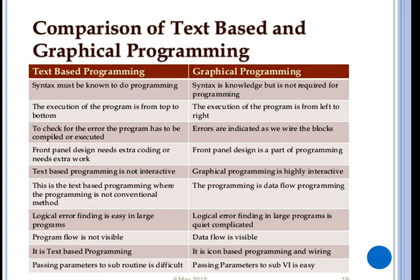Comparing text-based and graphical programming: in text-based programming you must know the syntax, execution goes from top to bottom, errors must be checked, compiled, and executed. Front panel design for visualization requires extra coding and extra work. Text-based programming is not that much interactive - to make it interactive you have to put more effort. Logical error finding is easy in large programs but program flow is not visible. This is an important difference - graphical programming has visible data flow, whereas passing parameters to subroutines is difficult in text-based programming but very easy in graphical programming for virtual instrumentation.